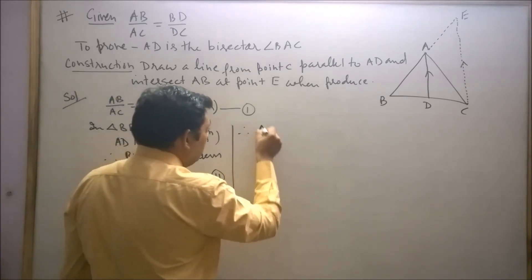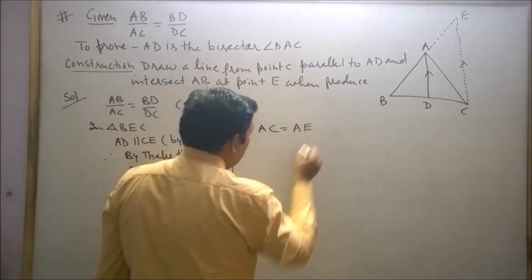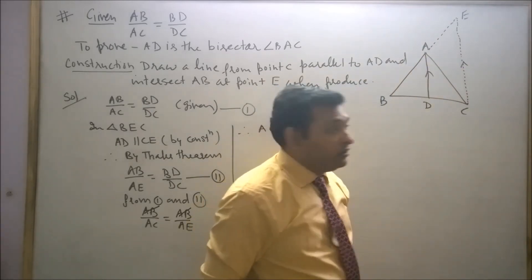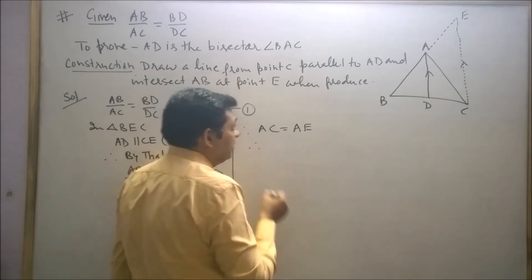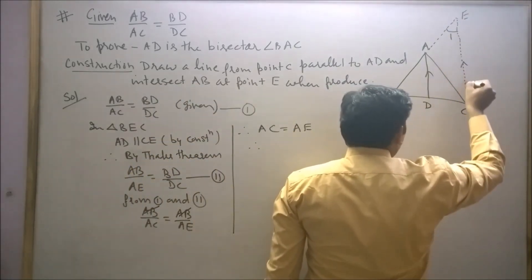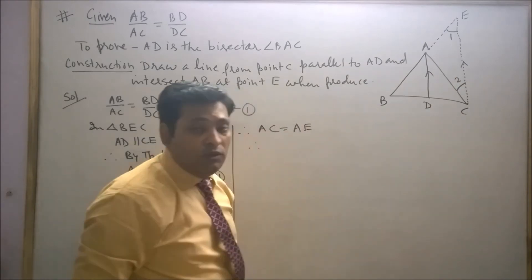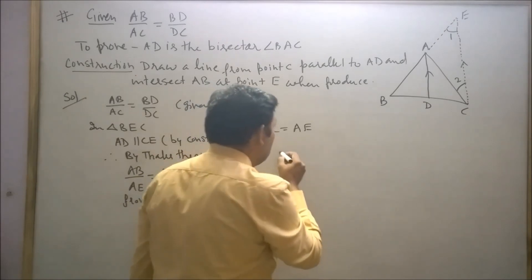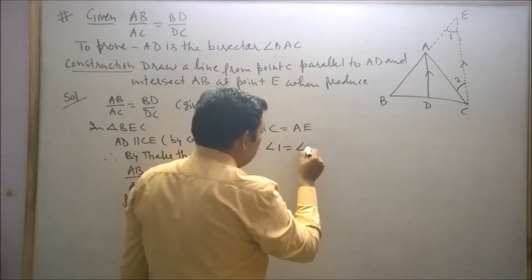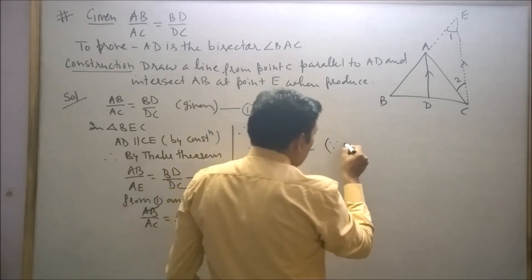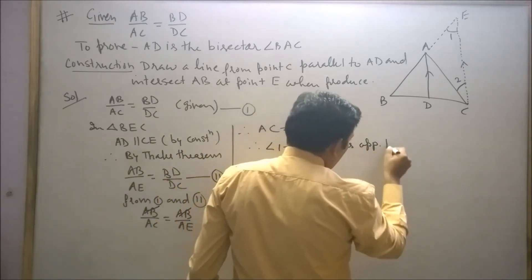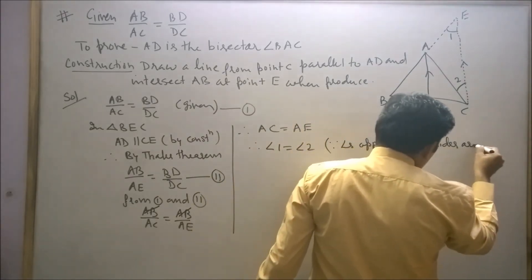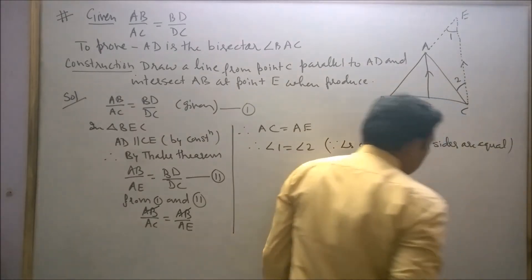Therefore AC is equal to AE. Now consider triangle AEC, which is an isosceles triangle. Therefore, angle 1 is equal to angle 2, since angles opposite to equal sides are equal in a triangle.